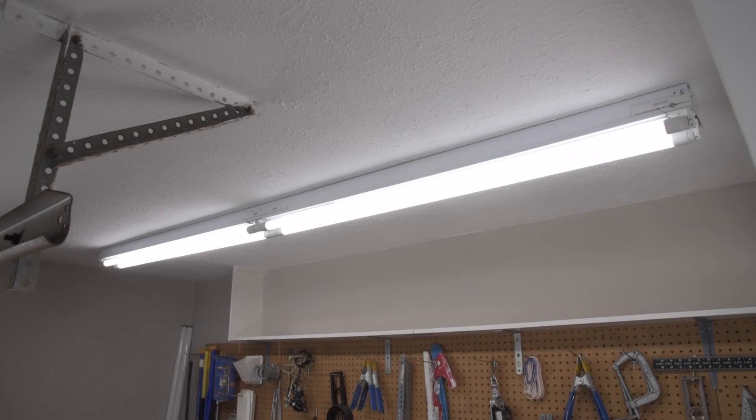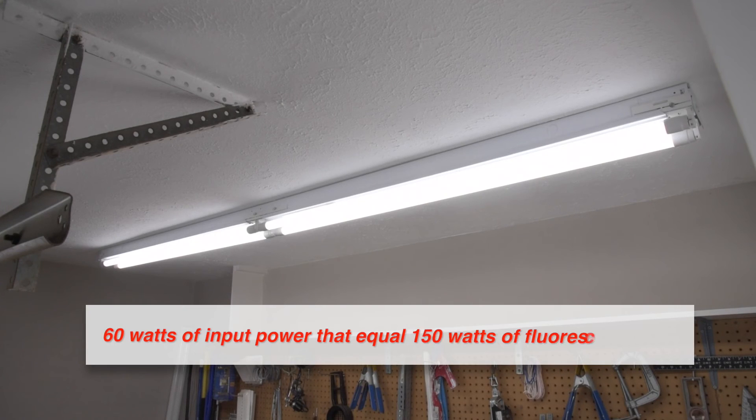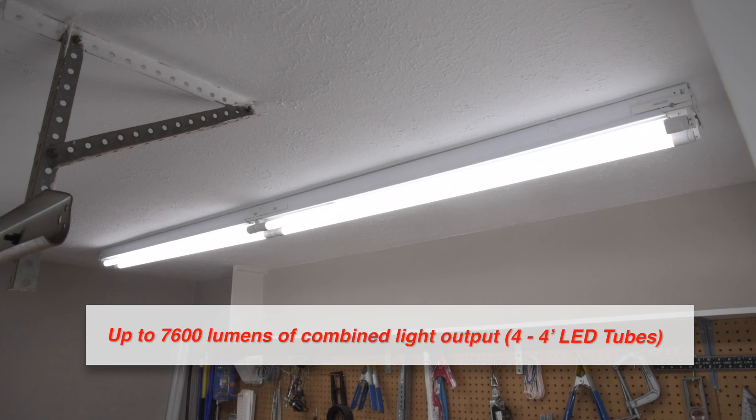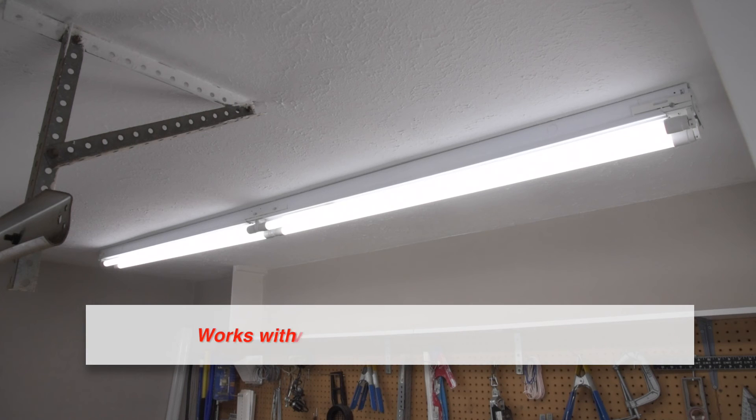You now have 60 watts of input power that equal 150 watts of fluorescent light, up to 7,600 lumens of combined light output when using 4 LED tubes. The fixture works with voltages from 120 to 277 volts.